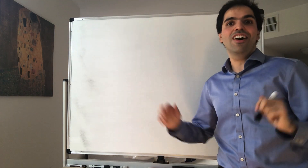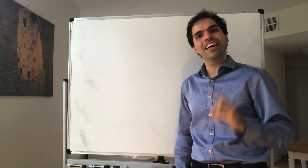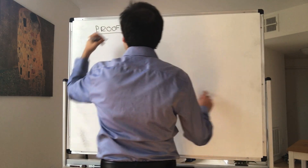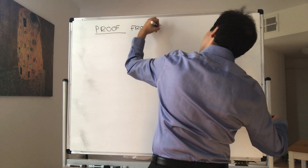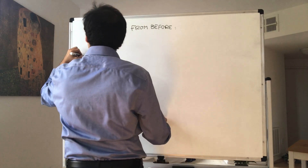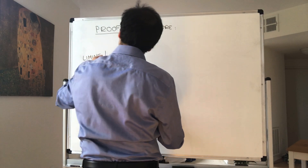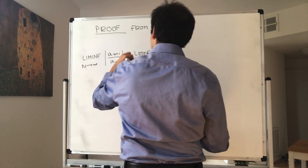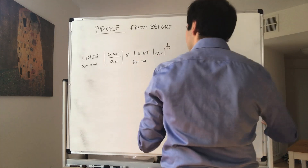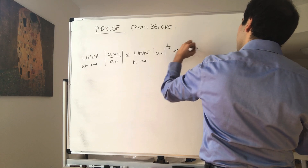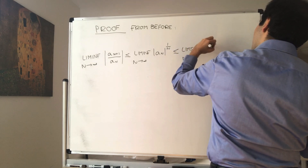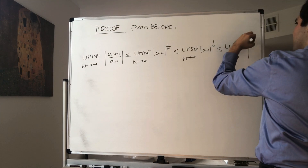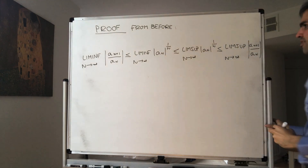The good news is there's nothing much to show, because we proved what's called the pre-ratio test in section 12, which says the root test is way better than the ratio test. From before, we have the chain of inequalities: the lim inf of the ratios a_{n+1}/a_n is less than or equal to the lim inf of the nth roots, which is less than or equal to the lim sup of the nth roots, which is less than or equal to the lim sup of a_{n+1} over a_n. This is always true.